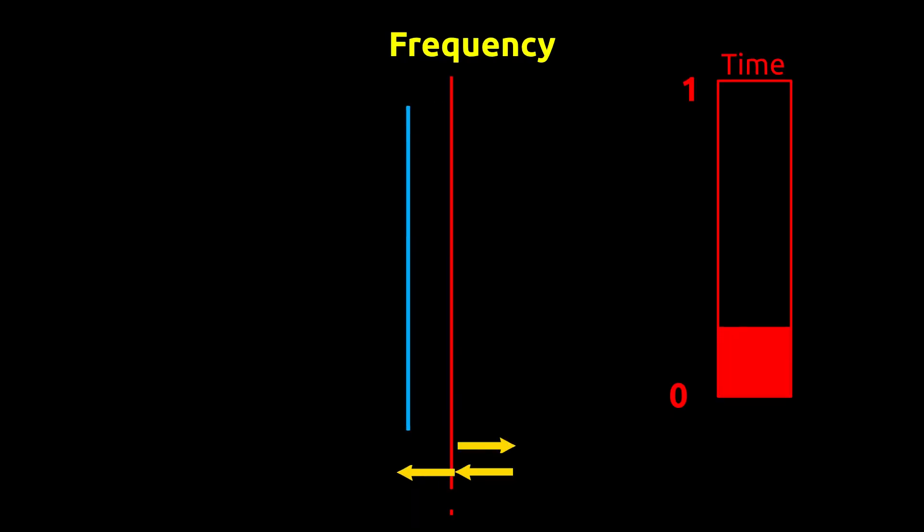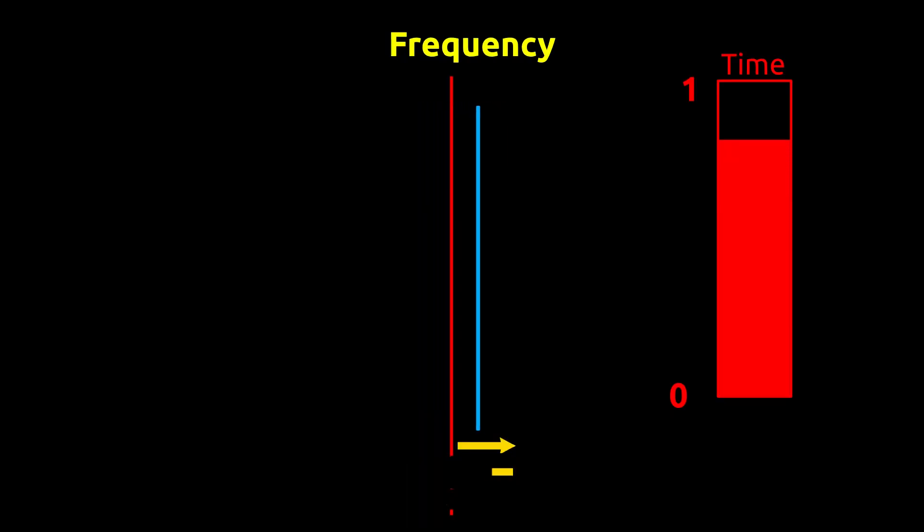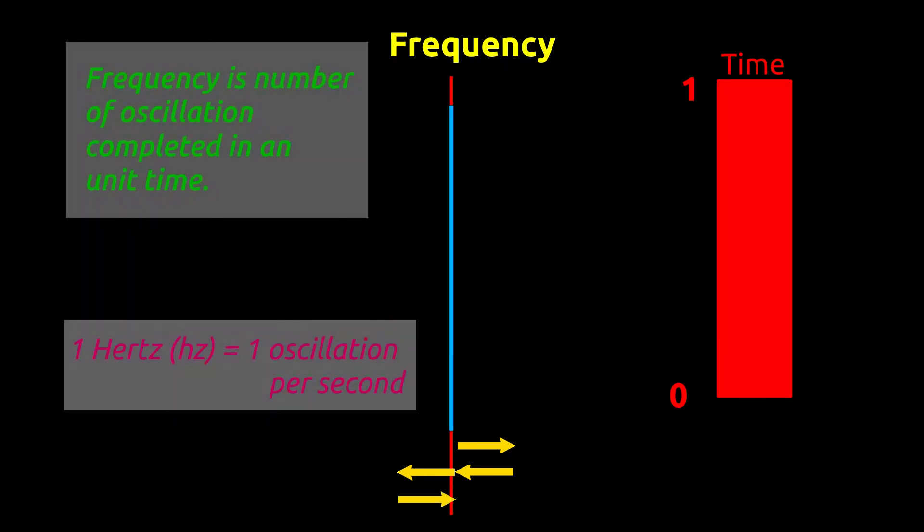First characteristic of vibration is frequency. It is equal to the number of oscillations completed by a vibrating object in a unit time. When unit time is one second, unit of frequency becomes hertz.